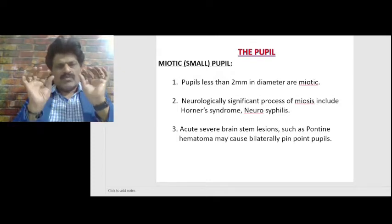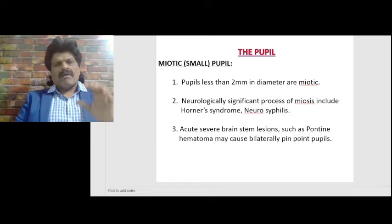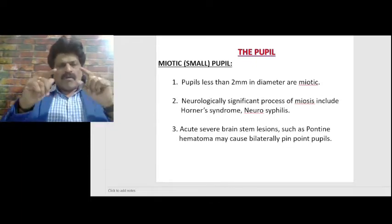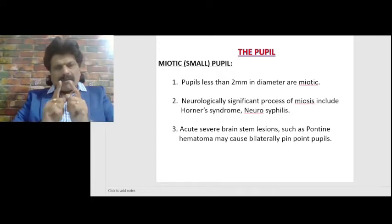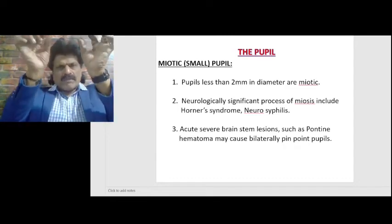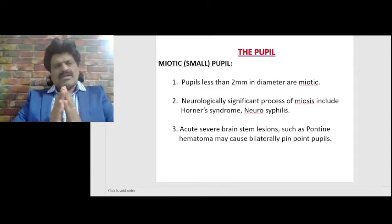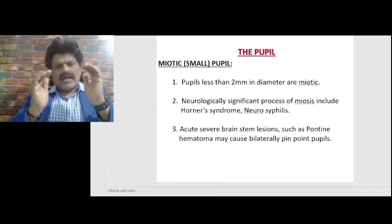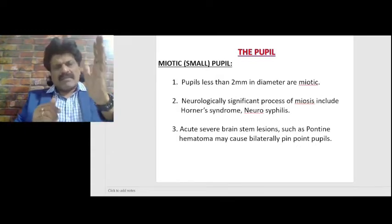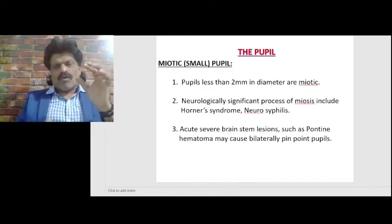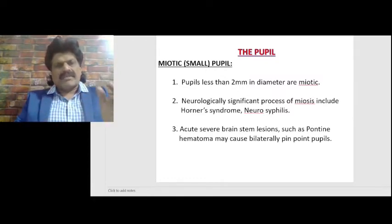Why in pontine lesions do we have bilaterally pinpoint pupils, but why in medulla do we have a single small pupil ipsilaterally? It is because of the blood supply of the medulla oblongata and pons. The medulla oblongata is supplied by two vertebral arteries, whereas the pons is supplied by a single basilar artery. We have two sympathetic pathways running through the entire brainstem, placed sideways. So when the medulla oblongata is affected because of a vertebral artery occlusion, the sympathetic pathway on the ipsilateral side gets affected, and therefore the pupil on that side is small.